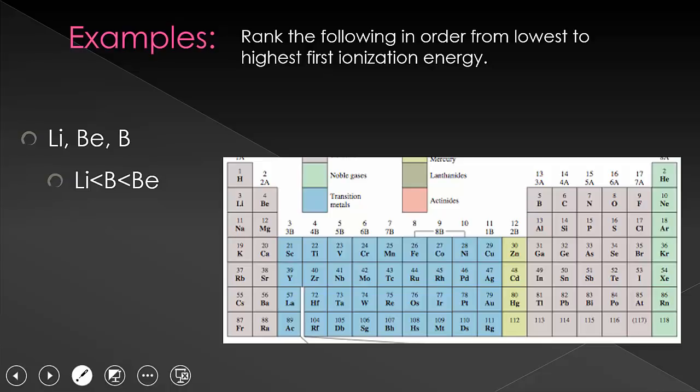Now let's do carbon, nitrogen, and oxygen. While the trend would say that the ordering would be carbon, nitrogen, and oxygen because oxygen has the highest effective nuclear charge, because there is that repulsion caused by the fourth P electron in oxygen, its ionization energy is lower than that of nitrogen, leaving it as carbon, and then oxygen, and then nitrogen.